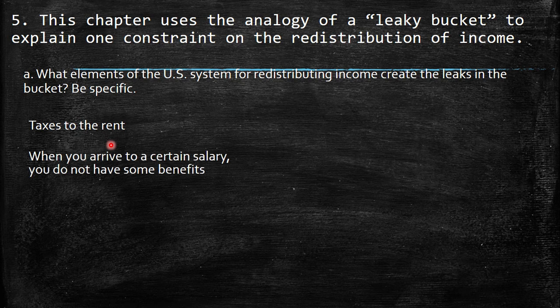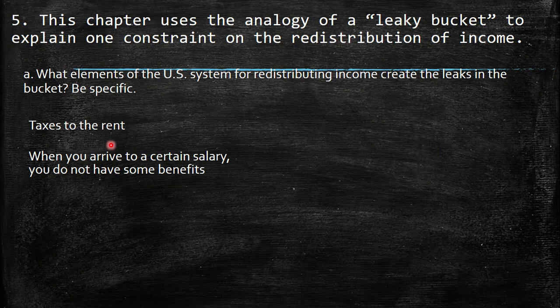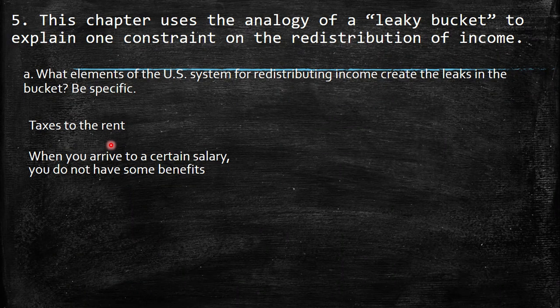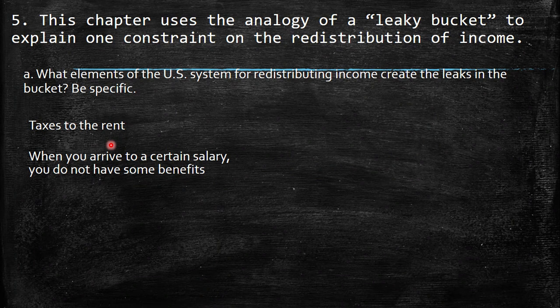Another example is benefit cliffs: when you reach a certain salary level, you lose some benefits. You know you could earn a higher salary, but if you do, you start to lose those benefits. So people ask: why should I work more if the additional hours I'm working will not provide a higher net salary — instead they will start to take away my benefits? Those are two examples of leaks in the bucket.